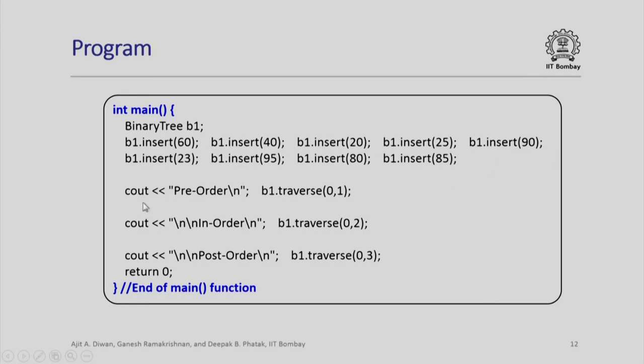Now the preorder traversal, the b1 dot traverse 0 and 1. For inorder traversal, we use the order value 2. And for postorder traversal, we use the order 3. So exactly the same function will traverse it differently depending upon whether we want it preorder, inorder, or postorder traversal.